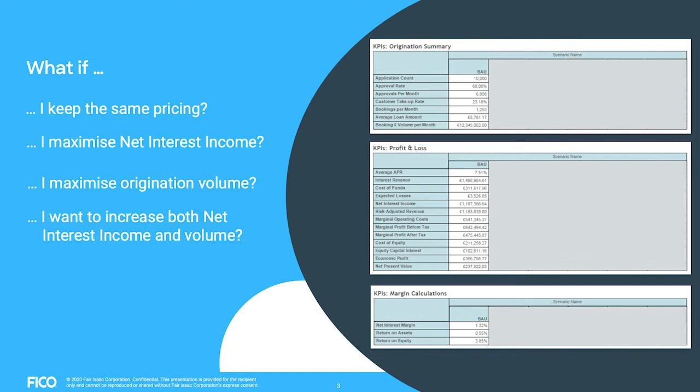The typical question for any portfolio manager is: what if? What happens to my portfolio if I keep the same pricing? That's the expectation you see on the right-hand side. But to actively manage and steer your portfolio, you probably also want to know what happens to your KPIs if you maximize net interest income, or alternatively if you maximize origination volumes — which are competing goals — or anything in between, such as increasing both net interest income and volume.